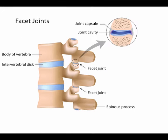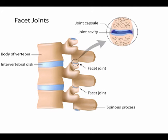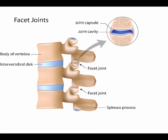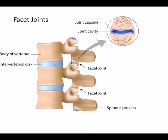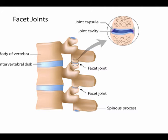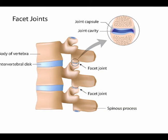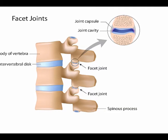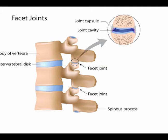The facet joint is a true synovial joint containing a synovial membrane, hyaline cartilage surfaces, and is surrounded by a fibrous joint capsule. The facet joint also contains synovial fluid which is kept in place by an inner membrane.